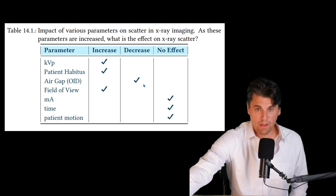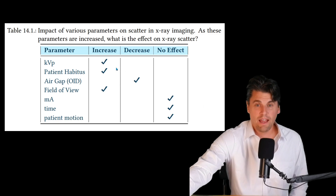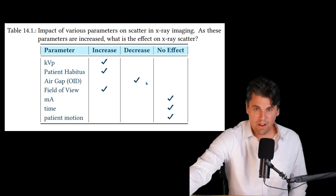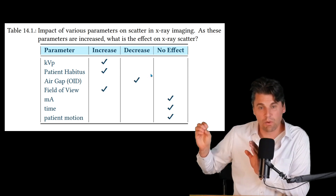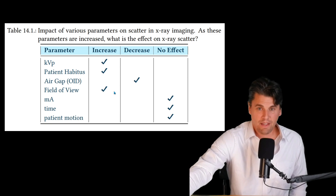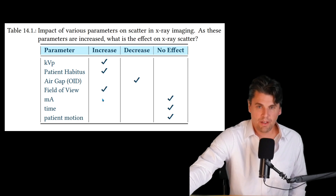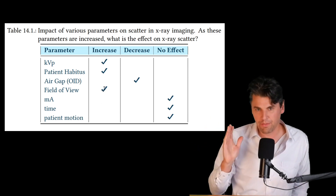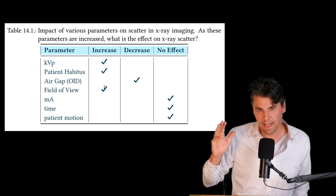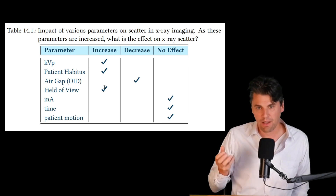Coming back to our table: increasing kVp increases scatter; increasing body thickness increases scatter; increasing the air gap or OID decreases scatter; increasing the field of view increases scatter. Also be aware that factors like mA or patient motion have a negligible impact on the amount of scatter in the image.